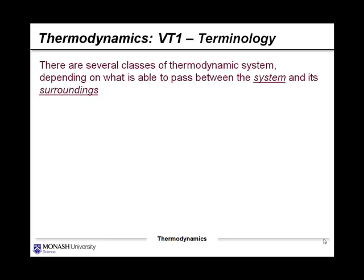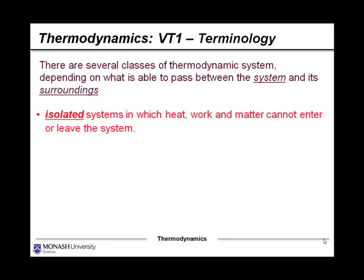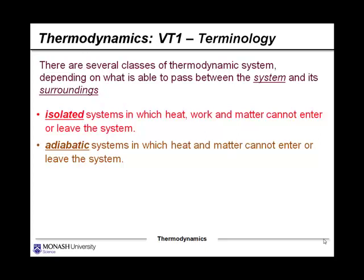There are several classes of thermodynamic systems depending on what is able to pass between the system and the surroundings. Isolated systems are those in which heat, work and matter cannot enter or leave the system. When you actually think about that, that's a challenging environment to try to set up — some sort of system completely insulated from the surroundings and the rest of the universe. Adiabatic systems are those in which heat and matter cannot enter or leave the system. Notice that this is different to the definition of an isolated system with respect to work.